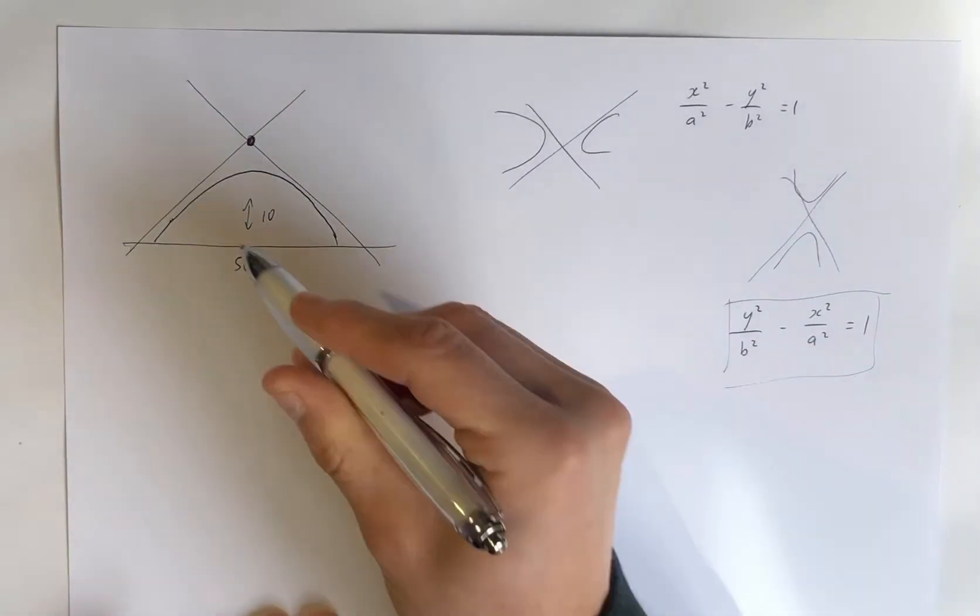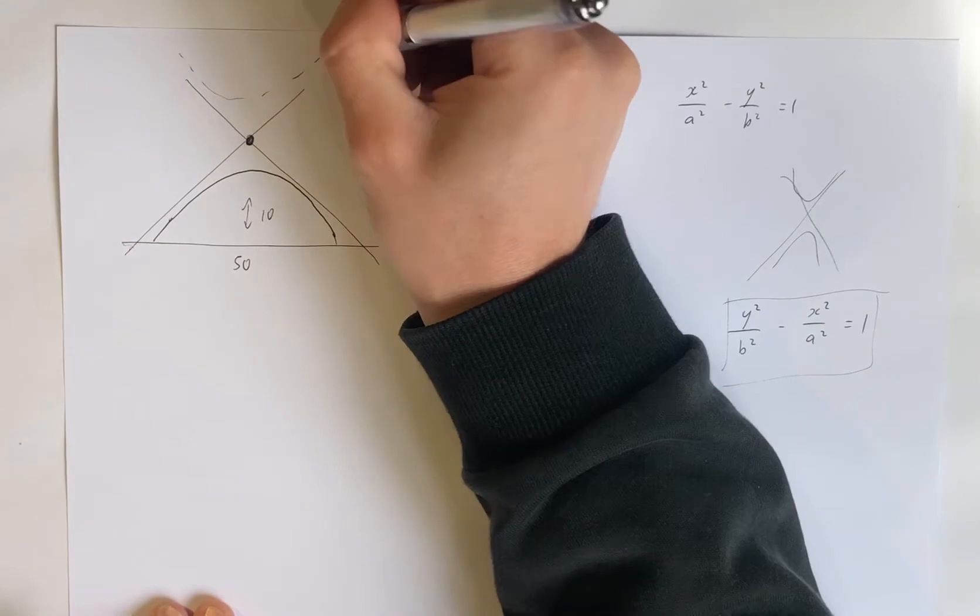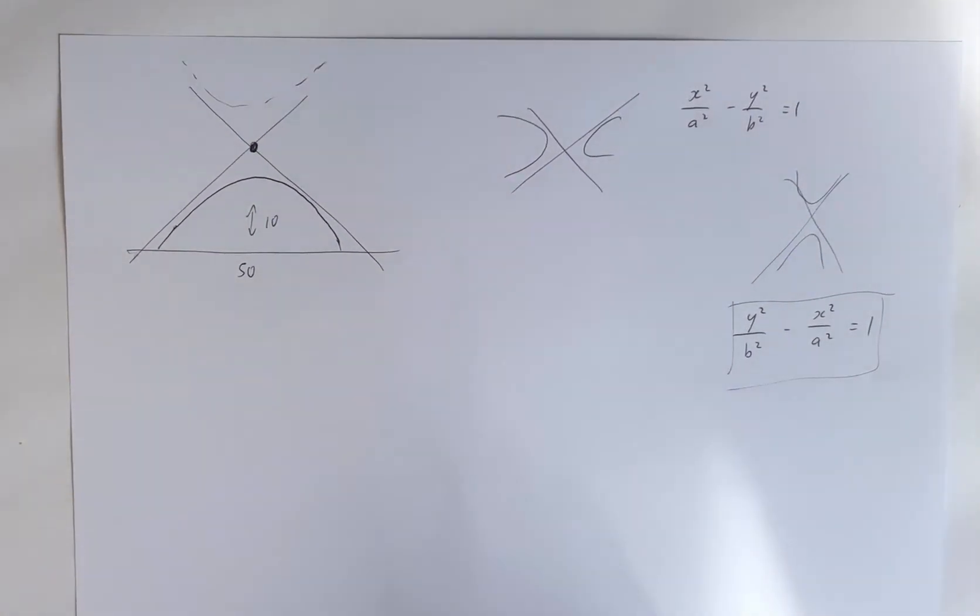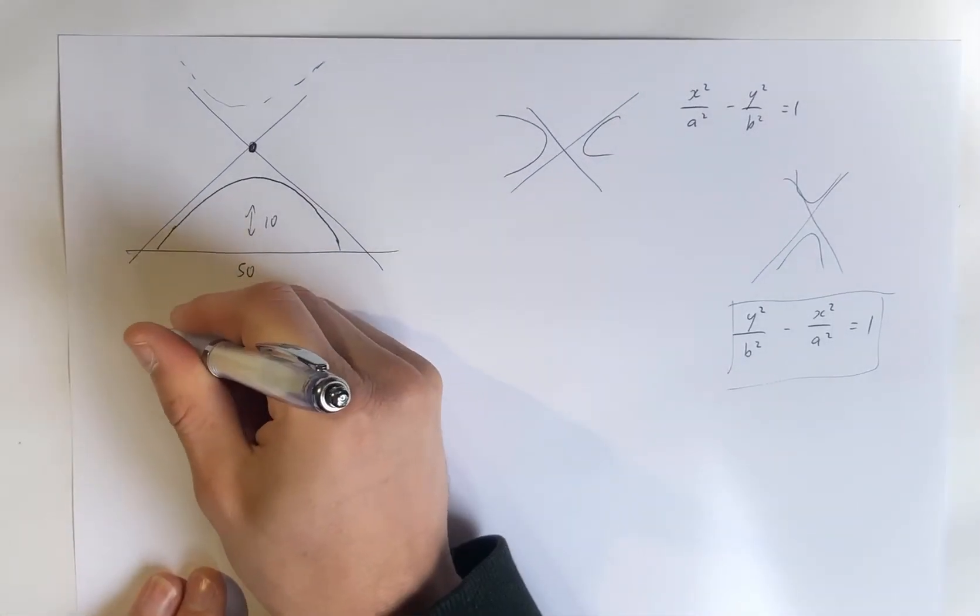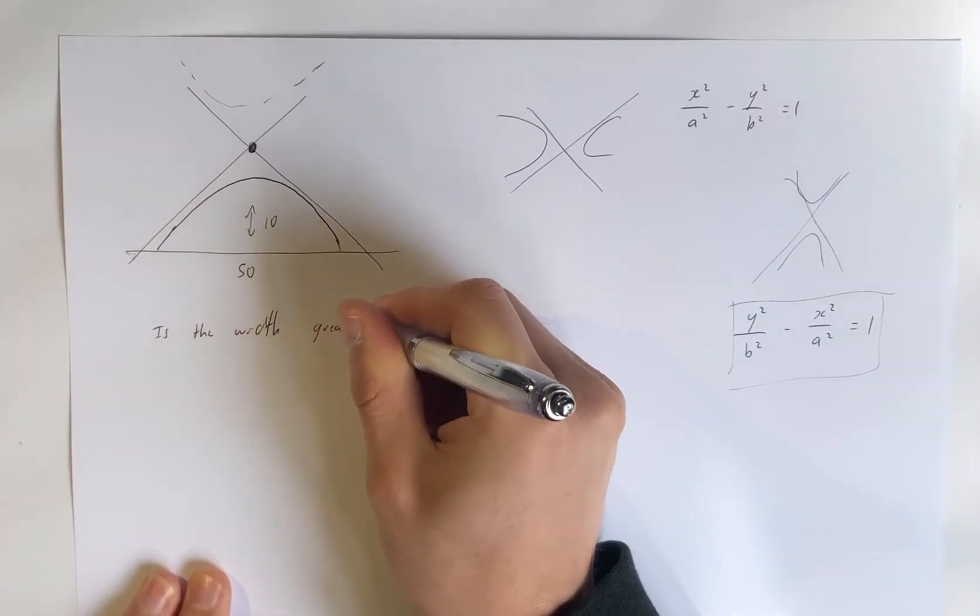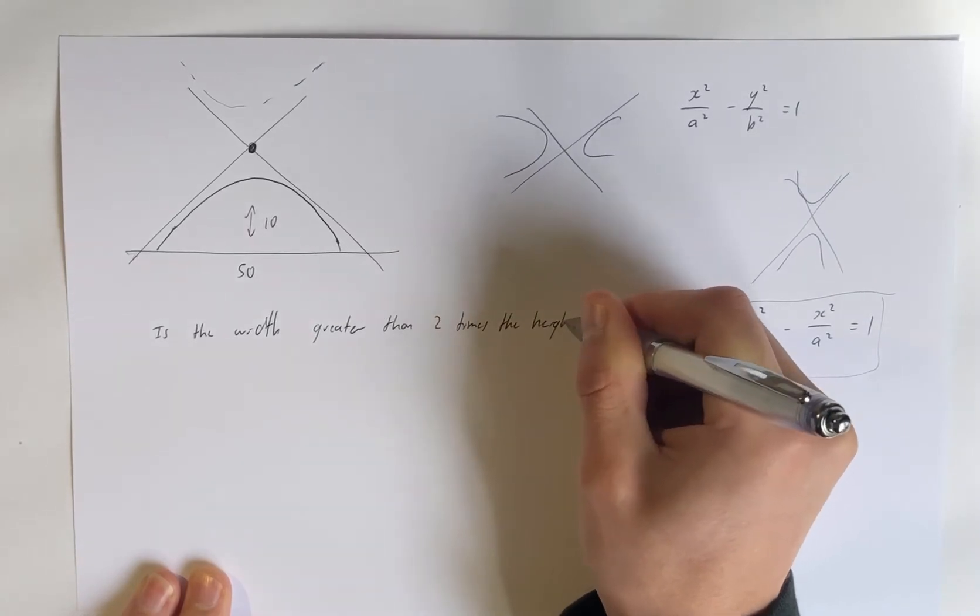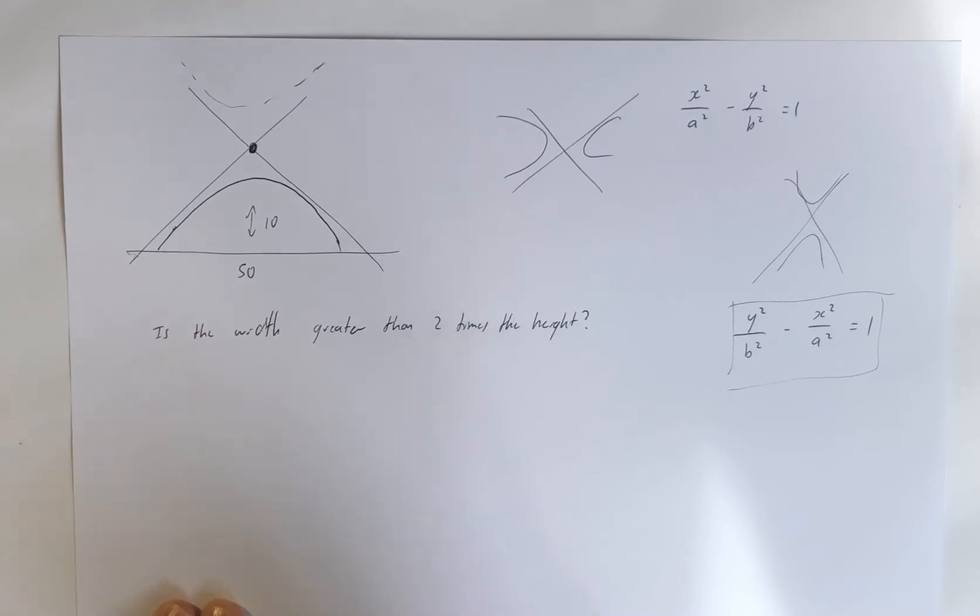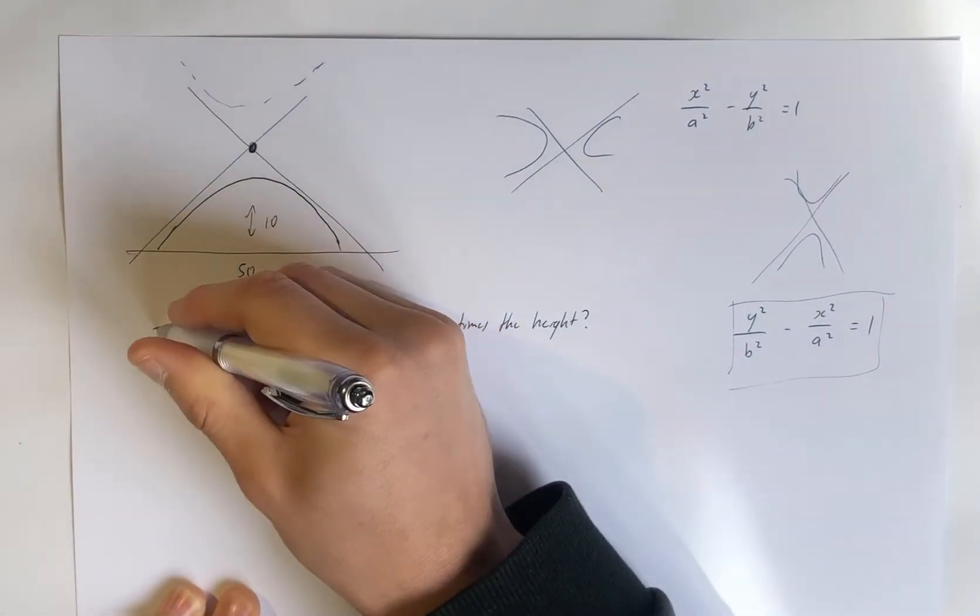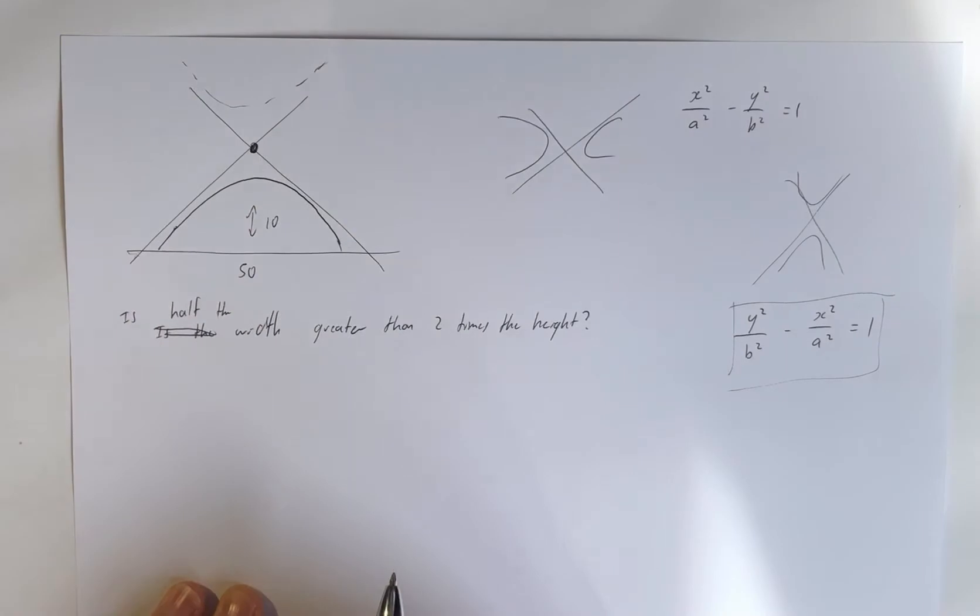And it looks like it's going to be this form here, isn't it? We're going to have to use this model because our roof design is orientated like this. So we're doing something with this model here. So if you're ever doing an elliptical model, you need to ask yourself a certain question. Is the width greater than 2 times the height?